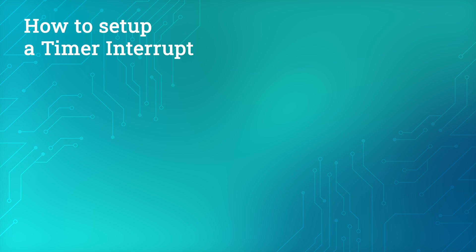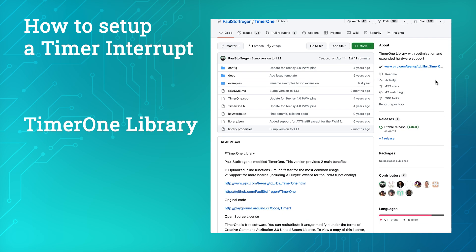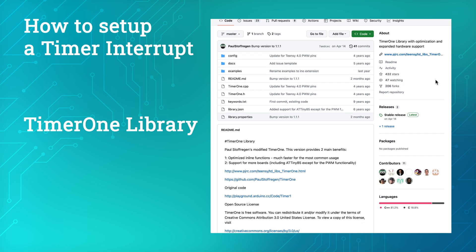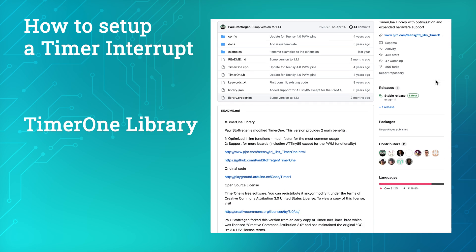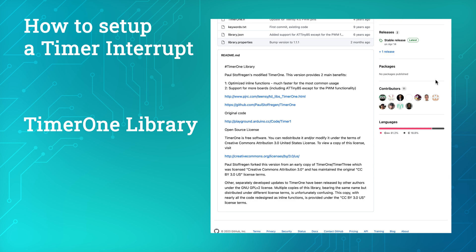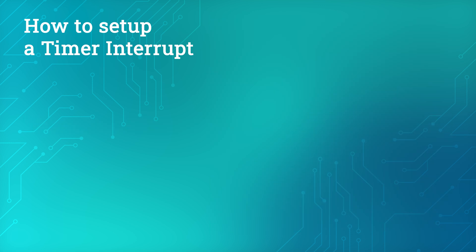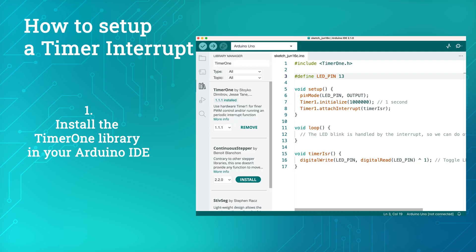Arduino Uno has three built-in timers. You can set these timers up to trigger an interrupt routine at exact intervals. To make this process more straightforward, we'll use the Timer1 library. Here's a step-by-step guide to setting up a timer interrupt.